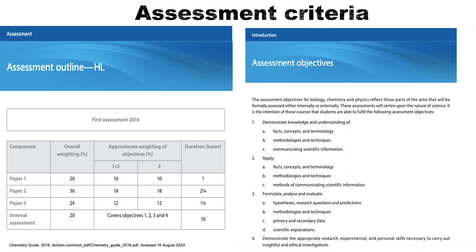The assessment criteria shows the overall weight of each paper on the final grade. Paper 1 and the internal assessment are both worth 20% of the overall grade. Paper 2 is worth 36% of the overall grade and paper 3 is worth 24% of the overall grade. These assessments cover four main objectives which are demonstrated in the slide. The grade out of 100 is then converted into a level which you will receive.